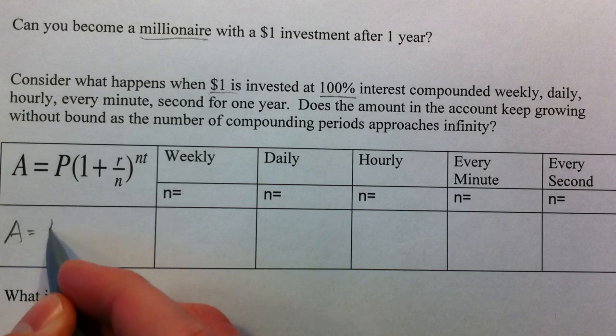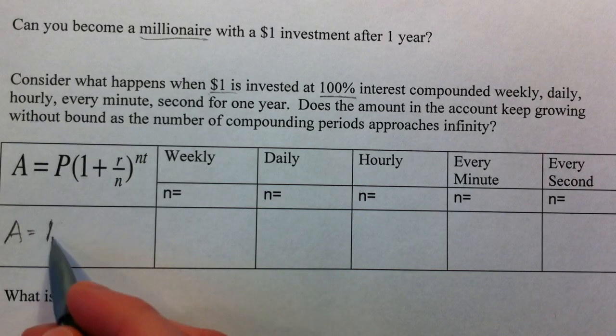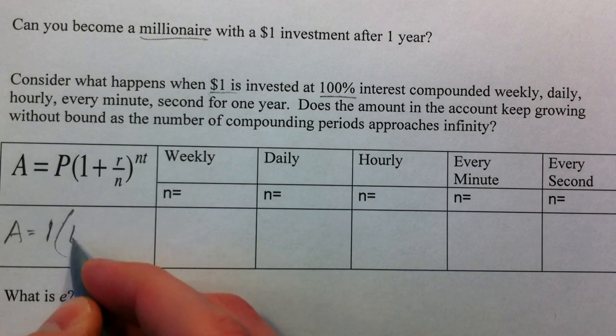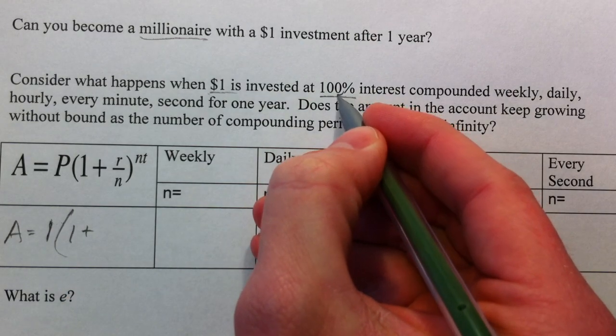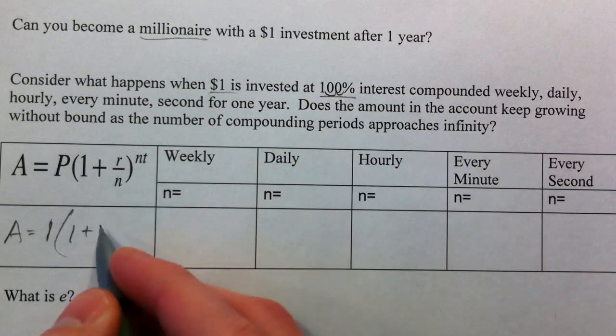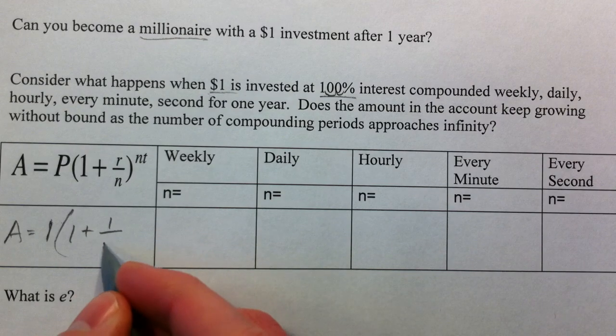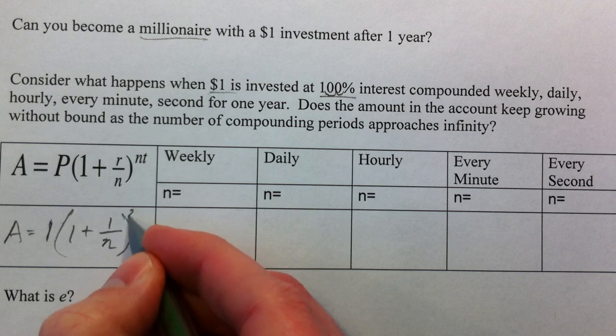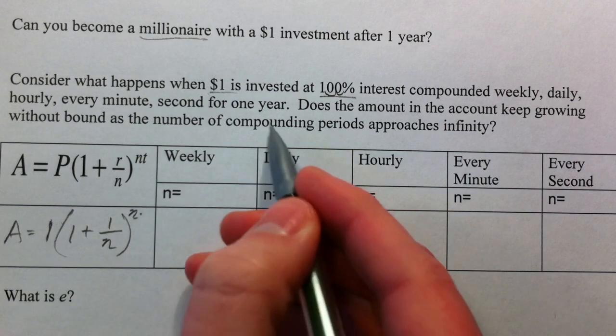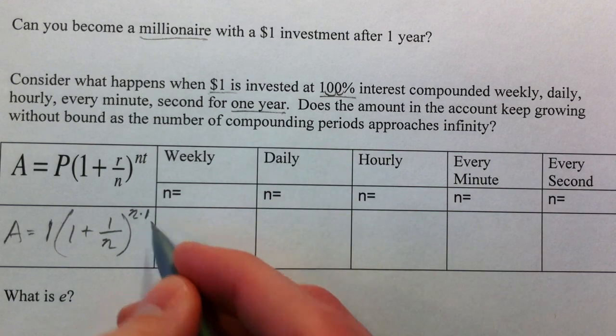A is after one dollar invested with our principal, and one plus our interest rate is a hundred percent. So we're going to move it twice, and that's just going to be one over our N raised to the N, and we're saying just one year. And so T is going to be one as well.